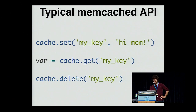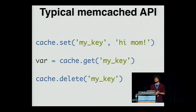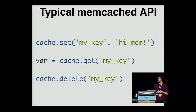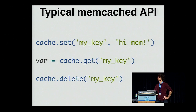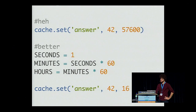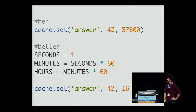The typical memcached API depends on the Python module you use, but you'll generally get a cache object. In Django, you do `from django.core.cache import cache`. You can set data with `cache.set(key, value)`, get with `cache.get(key)`, and delete with `cache.delete(key)`. Any picklable object will typically work with your memcached module. When you set an object, you can give it an expiry in seconds. I like to use constants — it makes your code slightly easier to read and more meaningful.